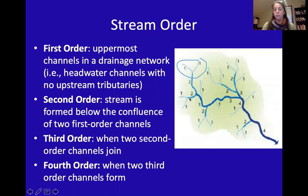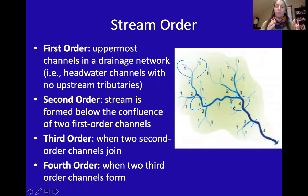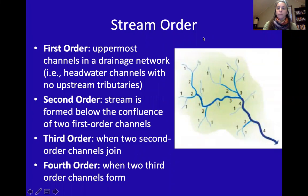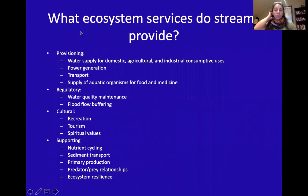When two second order streams come together they create a third order stream, and when two third order streams come together they create a fourth order stream. You can also have a first order stream coming directly into a fourth order stream. All of this is part of the same watershed and flows down into fourth order, fifth order, and into water bodies.